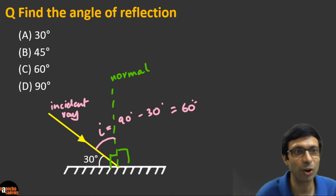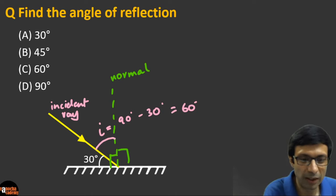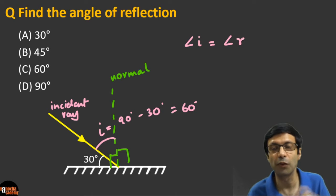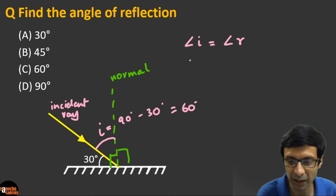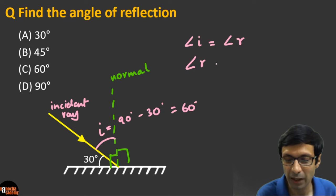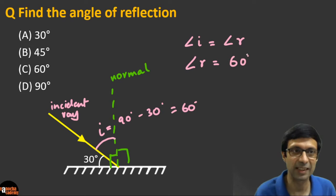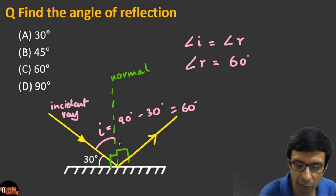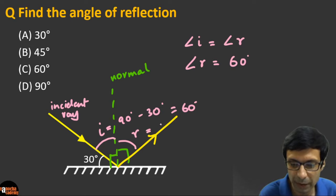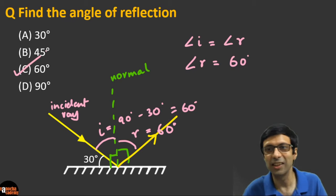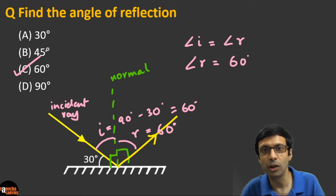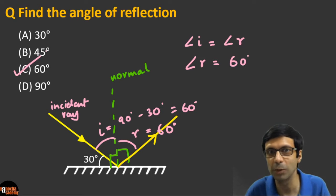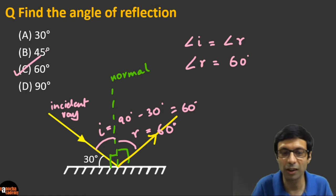Since angle of incidence equals angle of reflection — that's the law of reflection — the angle of reflection is also 60 degrees. So the correct answer is (c) 60 degrees. If some of you wrote 30, remember that the angles are always measured from the normal, so it's 90 − 30 = 60.